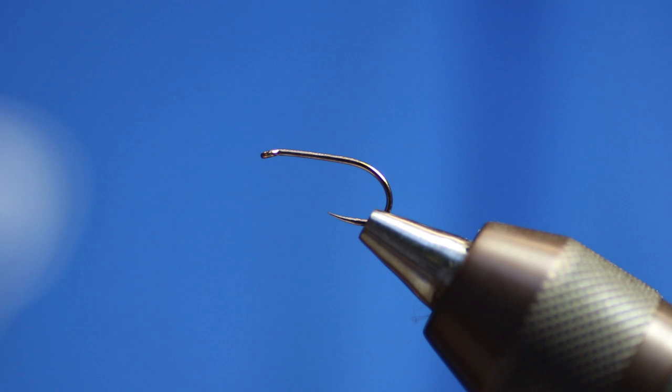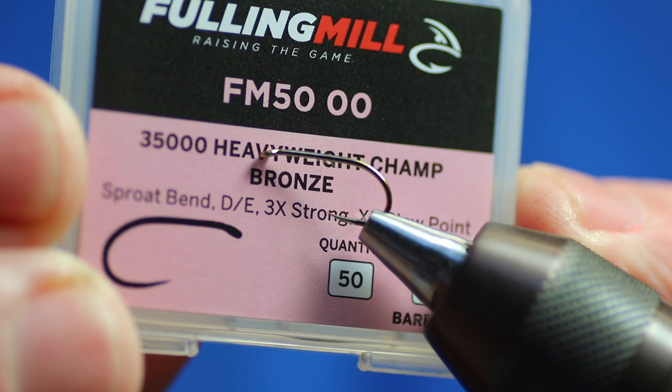So today I'm going to be tying a wee damsel, it's a little straggle damsel. You can tie it in an international size, you can do it with a wee bit of a longer tail. I've used this one quite a lot. It's on a barbless hook just now, but obviously we maybe use a 175 with a barb on it, so that's a heavyweight champ.